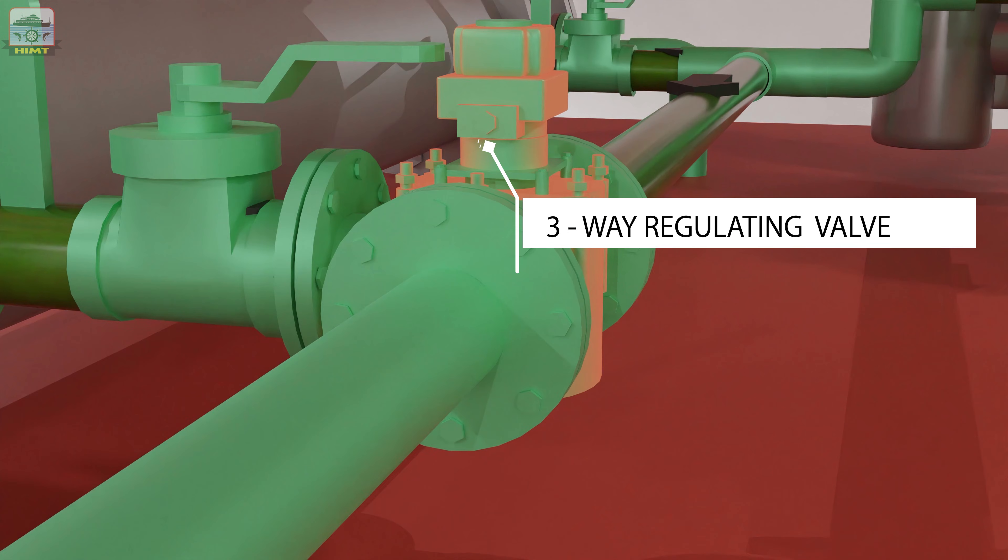A three-way temperature regulating valve is fitted across the cooler to regulate the quantity of lube oil passing through the cooler in such a way that maintains the temperature of lube oil entering the engine at a set constant level.